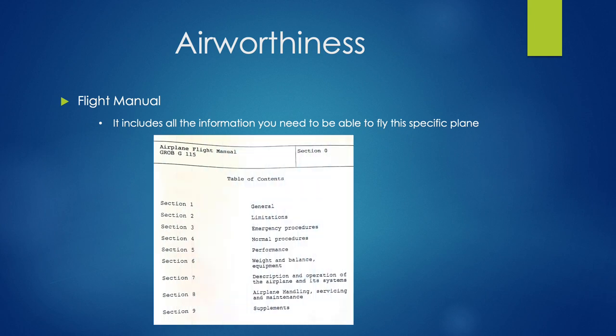The flight manual or Pilot Operating Handbook includes all information we need to fly the plane. It is split into different sections: a general section, a limitations section, emergency procedures and how to deal with them, normal procedures, performance, and weight and balance calculations. Any kind of way of operating the aircraft will be listed in the flight manual.